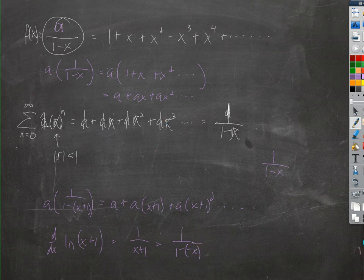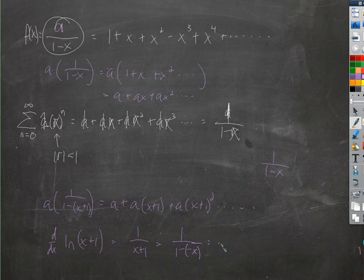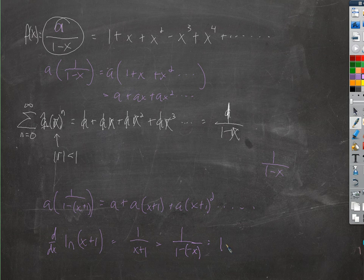And now we can use this right here. So if this is equal to, what would it be equal to? 1, since this is negative x, it would be negative, so that would be minus x, that would be plus x squared minus x to the third, and so on.